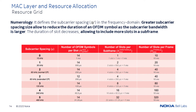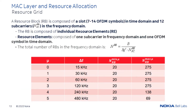We have mentioned the importance of the selected numerology for the duration of a slot and the number of resource blocks which fit in the available bandwidth. The numerology defines the sub-carrier spacing in the frequency domain, which is directly related to the duration of an OFDM symbol. As the sub-carrier spacing increases, the duration of an OFDM symbol decreases, allowing more slots to be included in a sub-frame. The resource block is composed of a slot with 7 to 14 OFDM symbols in the time domain and 12 sub-carriers in the frequency domain.